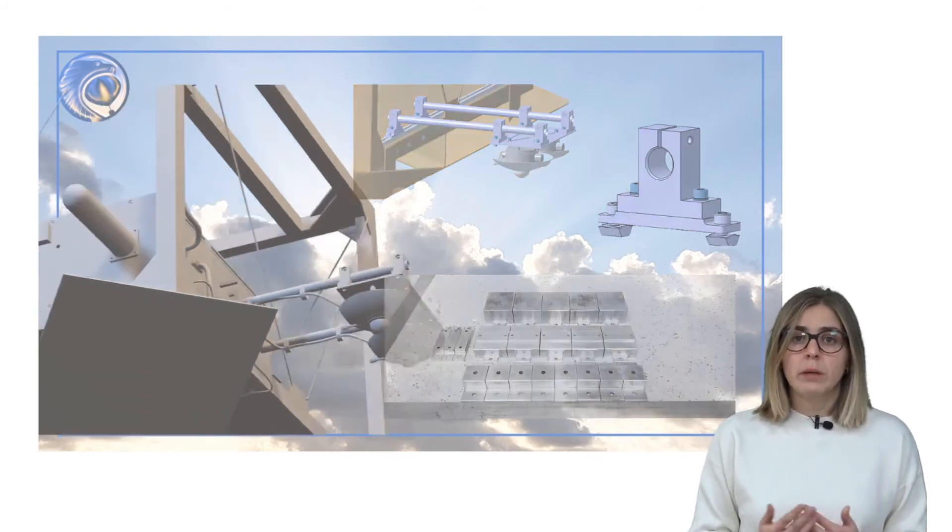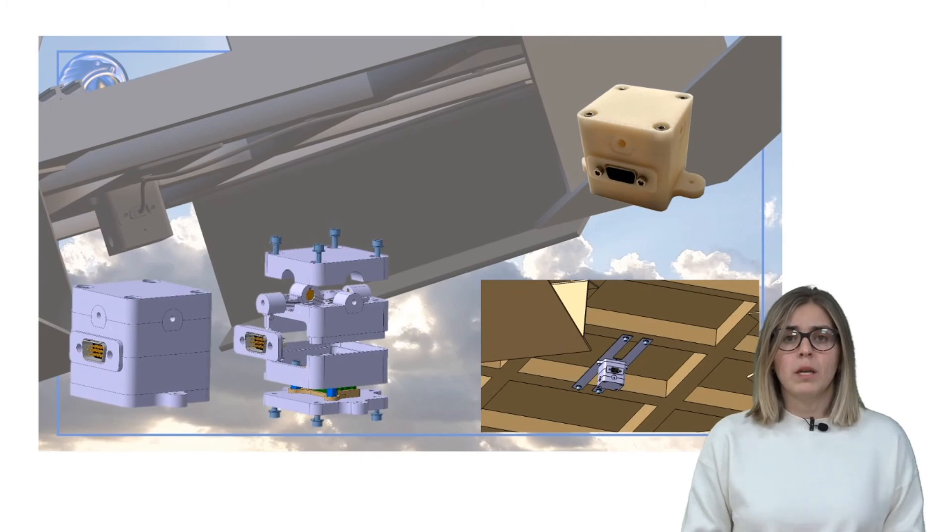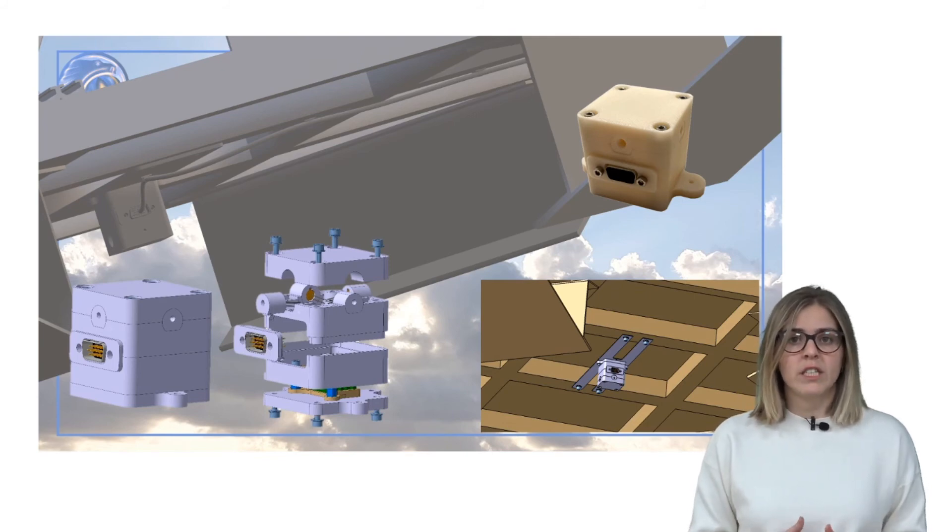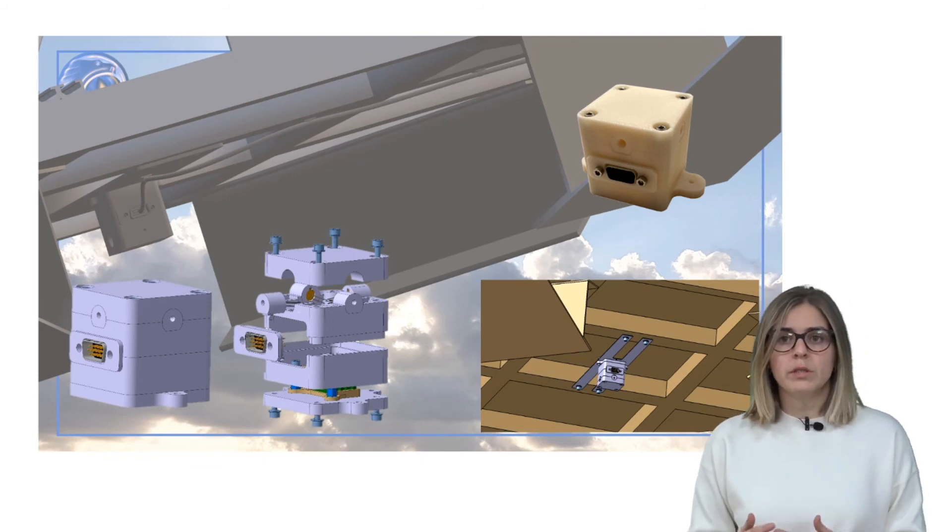And last but not least, we have the Attitude Lab. The Nadir sensor is manufactured via 3D printing at the university facilities with Ultem 1010. The main body of the sensor is divided into three different sections, as seen in the pictures. Some of the sections are fixed together with screws, while others use adhesive bond.